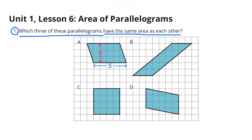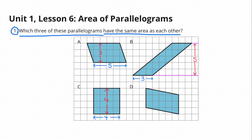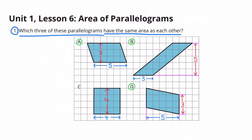Number 1. Which three of these parallelograms have the same area as each other? The dimensions for figure A are 3 by 5, the dimensions for figure B are 3 by 5, the dimensions of figure C are 4 by 4, and the dimensions for figure D are 3 by 5. Parallelograms A, B, and D all have the same area as each other, and 3 times 5 is 15, so their area would be 15 square units.